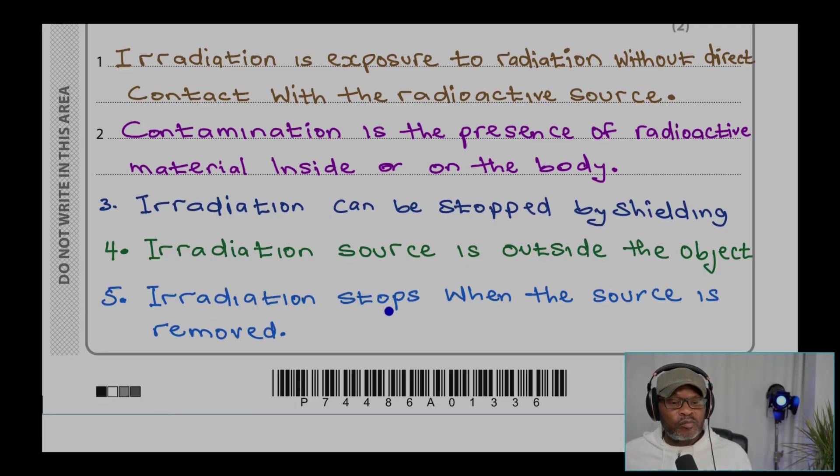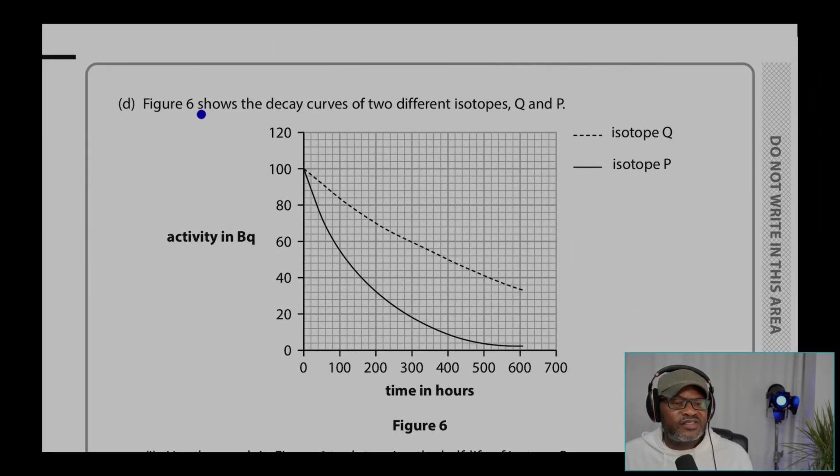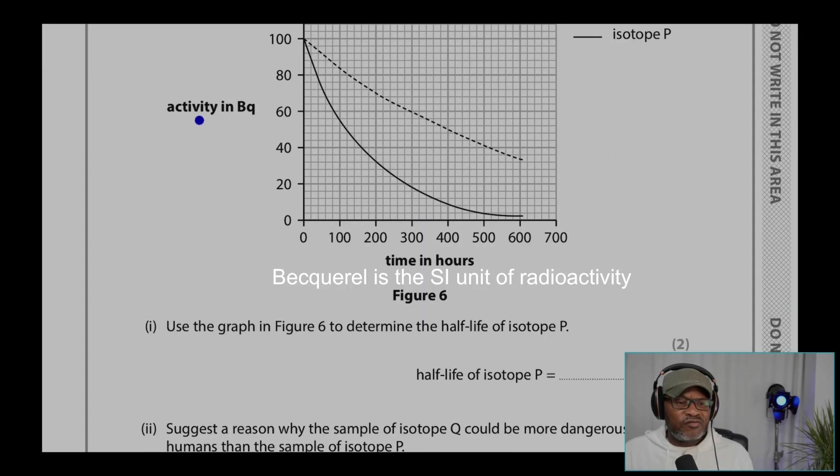D, Figure 6 shows the decay curves of two different isotopes, Q and P. So that would be Q and this is isotope P. Activity in becquerel, time in hours. Use the graph in Figure 6 to determine the half-life of isotope P.